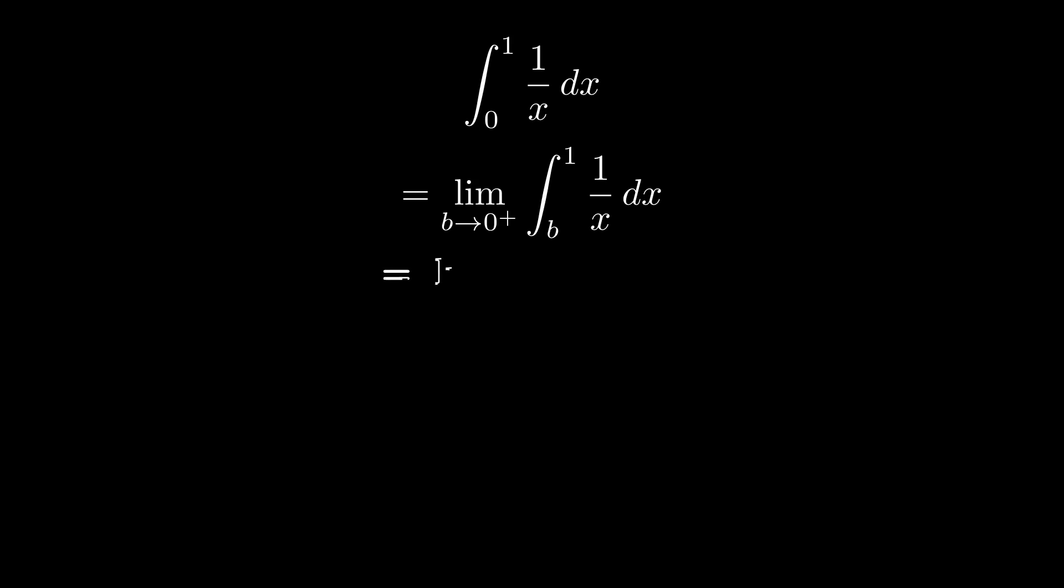And we will solve this integral as we normally would. Once you get to this point here, you will notice that unfortunately, the limit as b goes to 0 for ln of b will tend to negative infinity. So this integral does not have a finite area. It diverges, even if it's on a short interval.